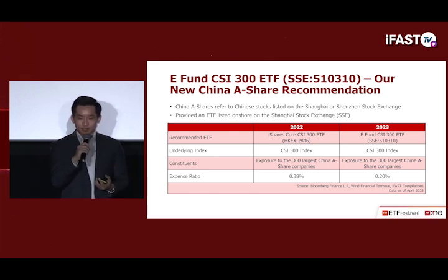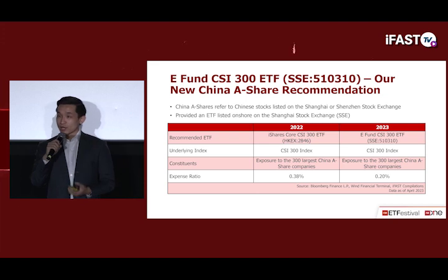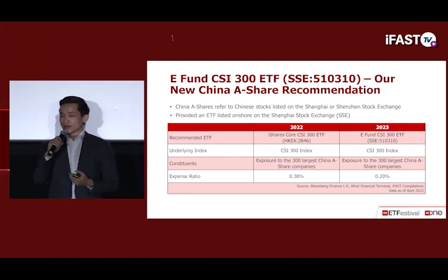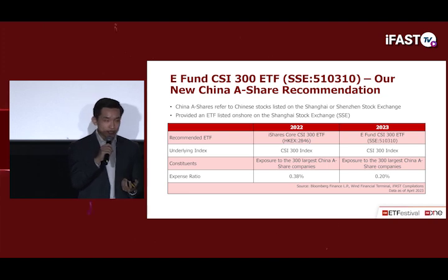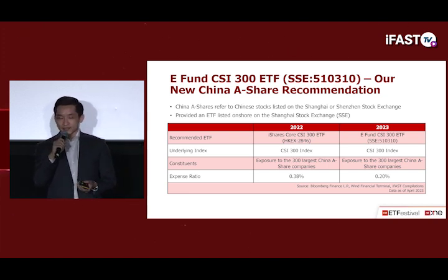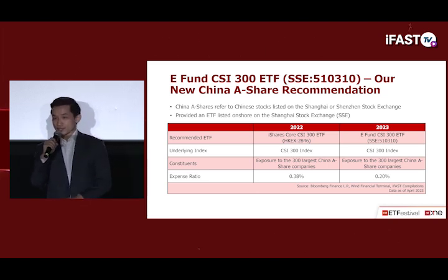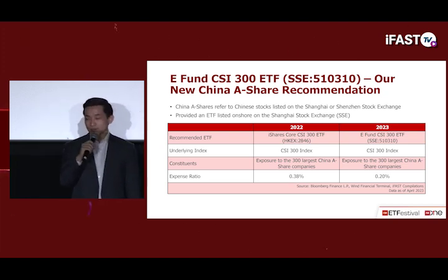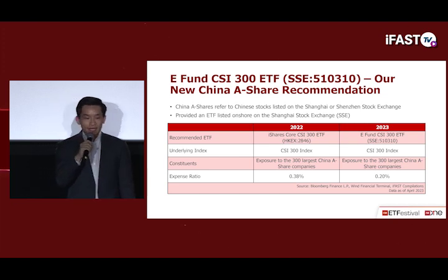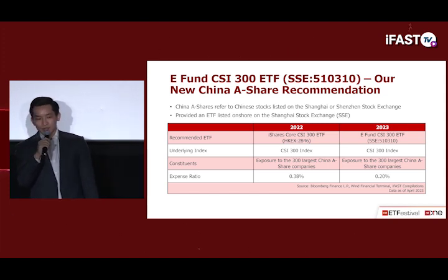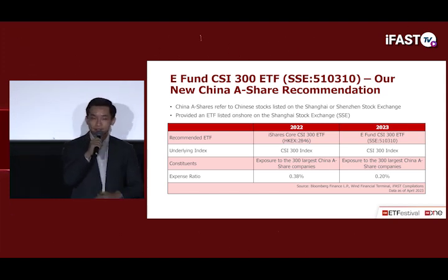As China moves toward a top-down state-controlled economy, it is more important than ever to align portfolios with Chinese priorities — investing in SOEs and companies in favoured industries such as green energy, electric vehicles, semiconductors, advanced manufacturing, and automation. The onshore market should continue to enjoy policy support given President Xi's desire to develop a robust onshore capital market to boost tech fundraising. Since most companies in the CSI 300 are found in the onshore market, we believe it may outperform the offshore market.